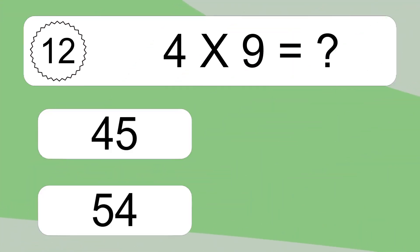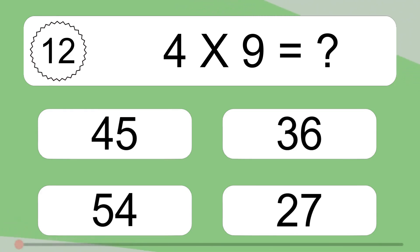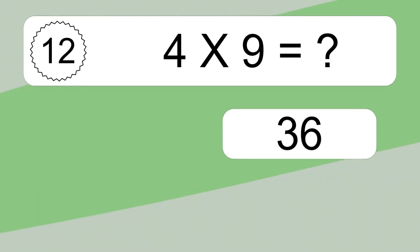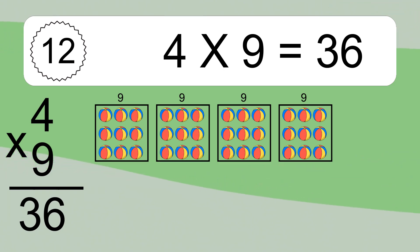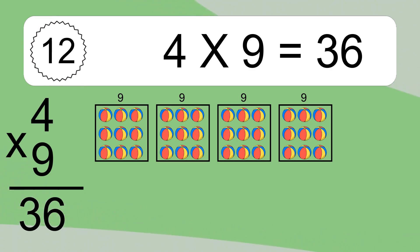4 times 9 equals what? 4 times 9 equals 36. We have 4 boxes, and each box has 9 colorful balls inside. If you count all the balls in all the boxes together, you will have 4 times 9 balls. This equals 36 balls.